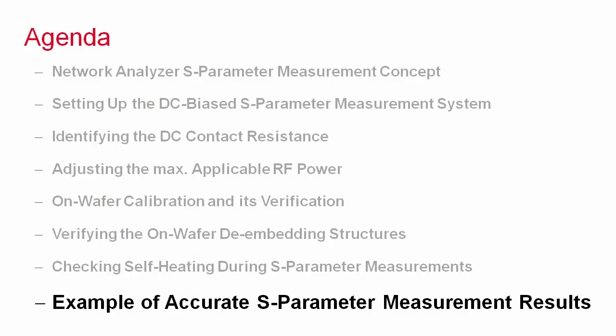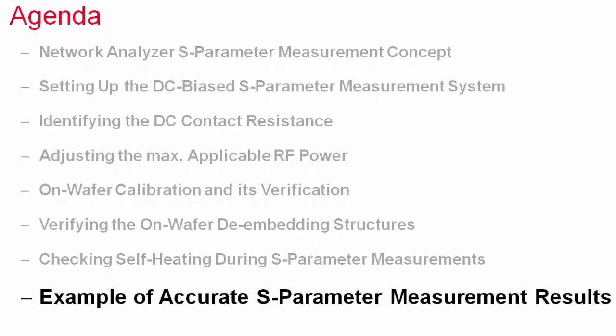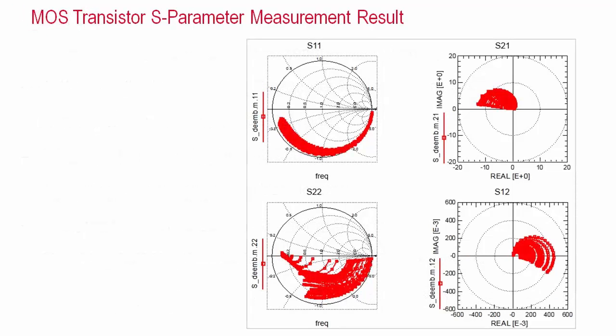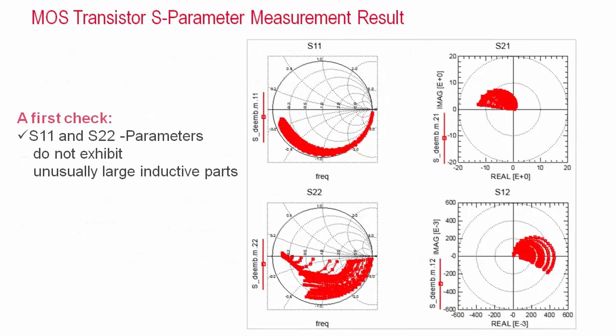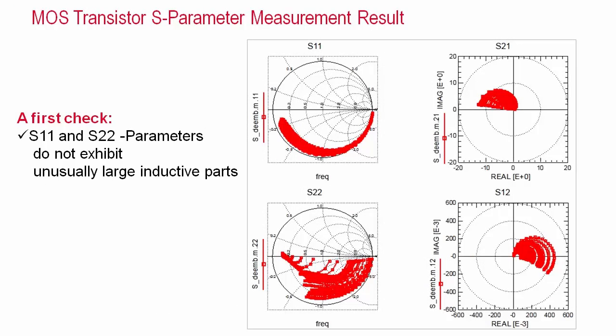With all these prerequisites fulfilled, everything is now set up to perform accurate S-parameter measurements. Let me show you an example of a MOS transistor. A first check is the behavior of the high frequency endpoints of the S-parameters. In our example, a measurement directly on the wafer does not assume large inductances, and the traces of S11 and S22 are not extending into the inductive half-plane of their Smith charts. So that's okay.